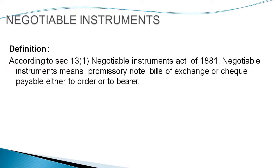Before moving to the endorsement concept, let me have a quick recap on negotiable instrument. The word 'negotiable' means transferable by delivery, and 'instrument' is nothing but a written document by which a right is created in favor of some person. Thus, the term negotiable instrument literally means a written document transferable by nature or transferable by delivery.